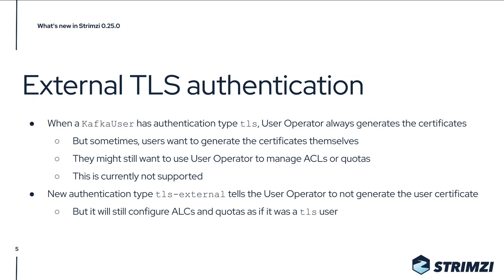Another improvement is support for external TLS authentication in the Kafka user resources. In the Kafka user resource you always specify the authentication type and the user operator generates the credentials and sets the ACLs or quotas accordingly. One of the types was 'TLS', which told the user operator that this user will be using TLS client authentication. As a result, the operator generated a new user certificate which the user could use for authentication.